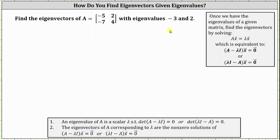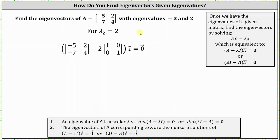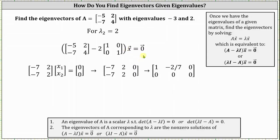Now let's consider the second eigenvalue of positive two. Again we find the corresponding eigenvectors by setting up the equation: the difference of matrix A and the product of lambda and the identity matrix times vector x equals the zero vector. For the coefficient matrix, the first row is negative five minus two times one, which is negative seven, and two minus two times zero, which is two. In the second row we have negative seven minus two times zero, which is negative seven, and four minus two times one, which is two.